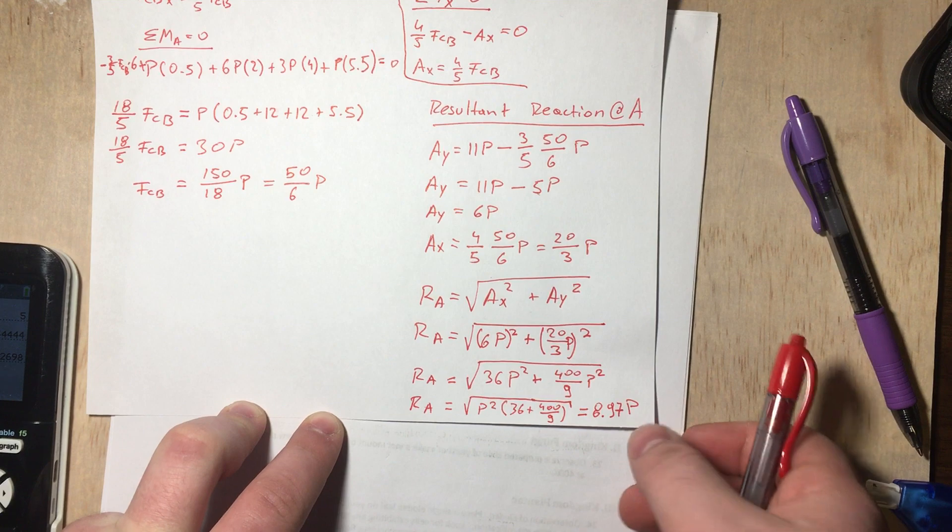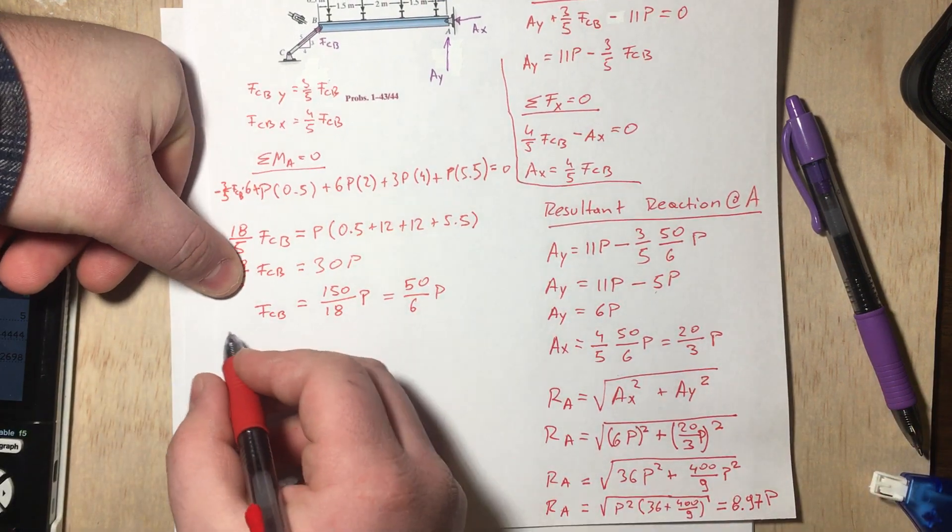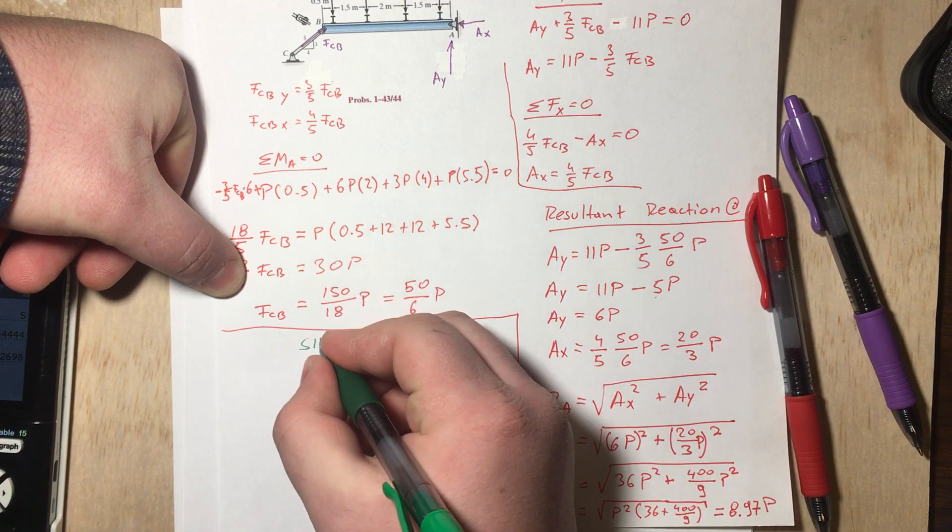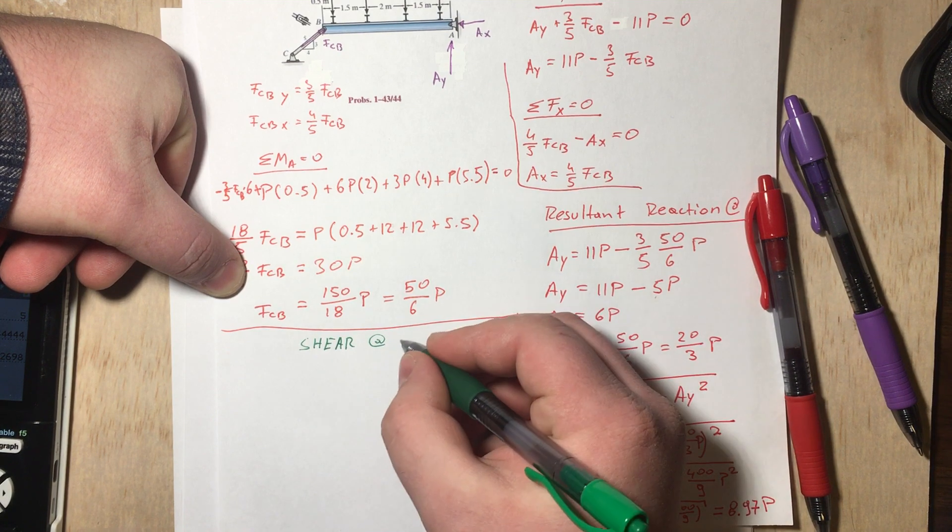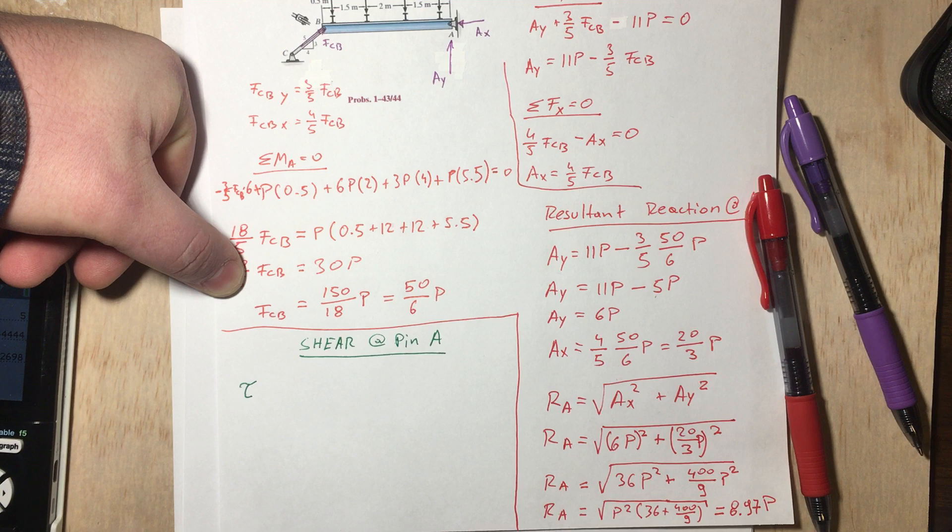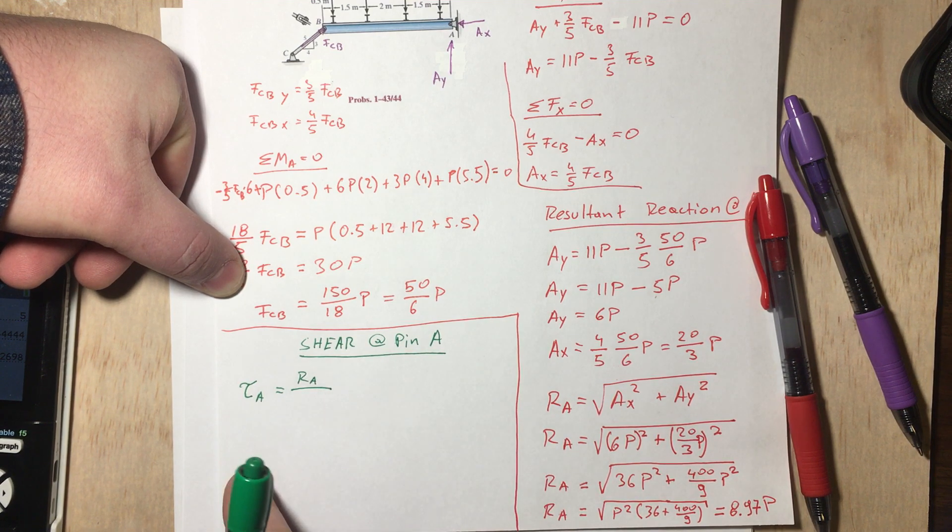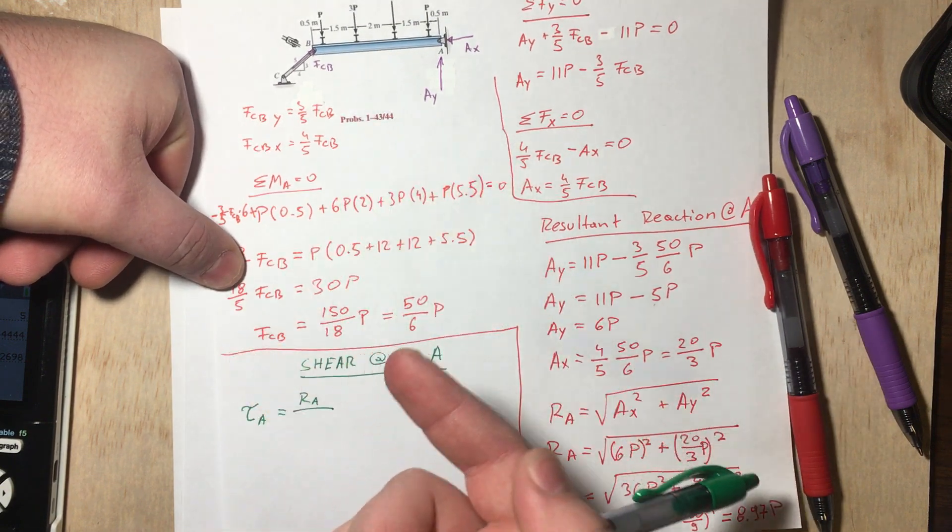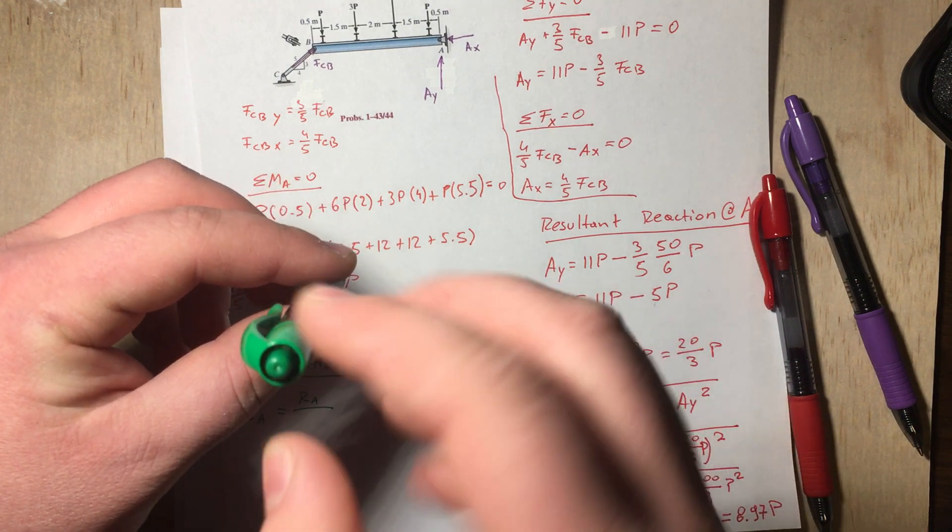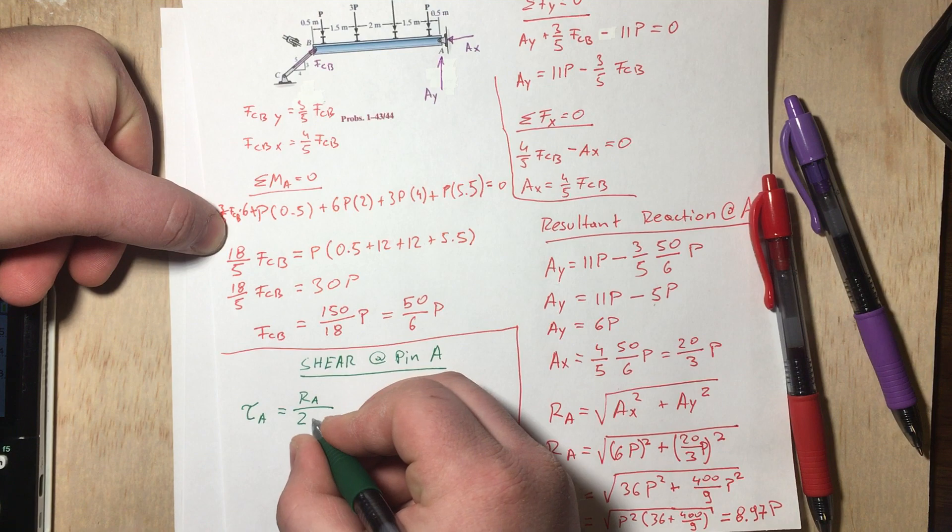Now that we have the resultant at A, we can calculate what P is going to be using the shear formula. Shear at pin A. As mentioned on the previous video, shear at A is going to be the resultant at A over the area, the cross-sectional area, but we're going to multiply that by 2 because it's a double shear. Think about having the pin right here. You're going to have a cross-sectional area on the top side and one on the bottom side because the force is going to be split equally.